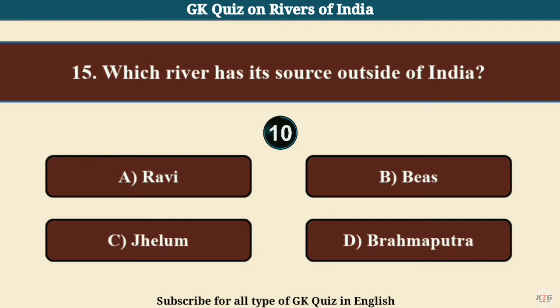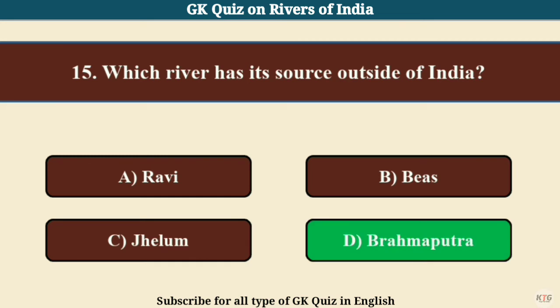Question No. 15. Which river has its source outside of India? Answer D: Brahmaputra.